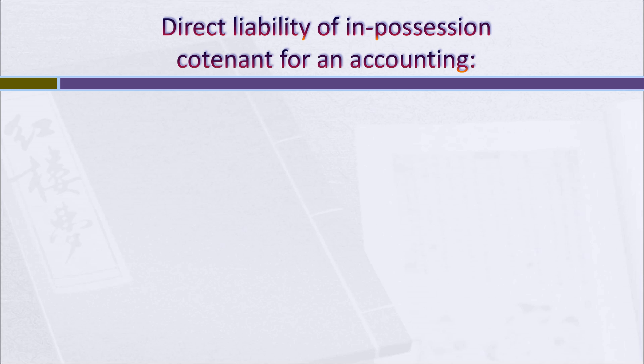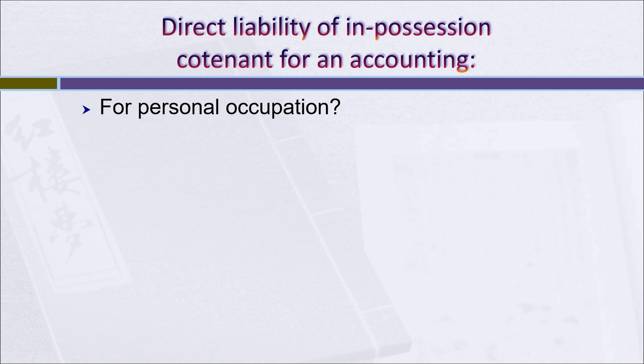Let's take a closer look at an accounting action. That's an action directed at a co-tenant who is in possession to make him or her give up some of the money or benefits that they've received from being in possession of the property. Is a co-tenant who's in possession liable for their personal occupation of the property? Do they, in effect, have to pay rent? The answer is no. There's no liability of a co-tenant who's simply possessing the property himself or herself, because that's exactly what a co-tenant is entitled to do — to possess all of the property anytime or all of the time if they wish.